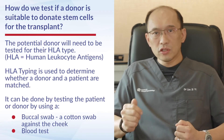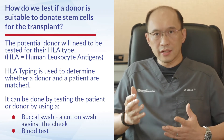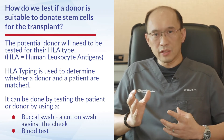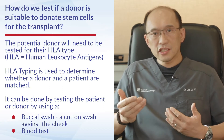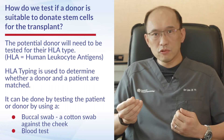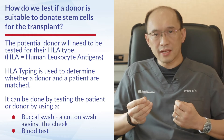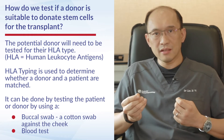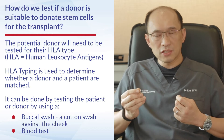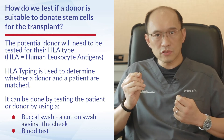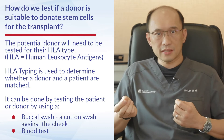For a donor to be eligible, we look at what we call HLA typing. HLA typing is a form of tissue typing used to determine whether a donor and a patient are matched. This can be done by testing either the patient or donor using a buccal swab — a cotton swab against the cheek — or a blood test.